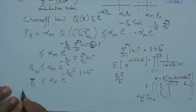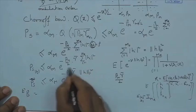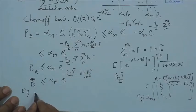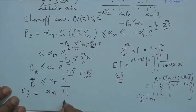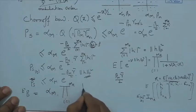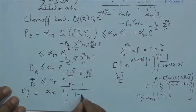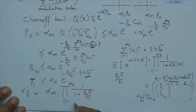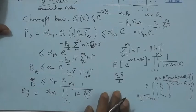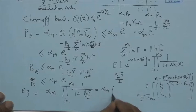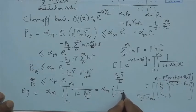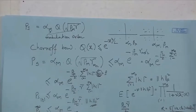Taking the expected value of P_s, with nu = beta_m × gamma_bar / 2, we get E[P_s] ≤ alpha_m × product from i=1 to MR of 1/(1 + beta_m × gamma_bar / 2), which equals alpha_m × (1/(1 + beta_m × gamma_bar / 2))^MR, assuming all gamma_i bars equal gamma_bar.